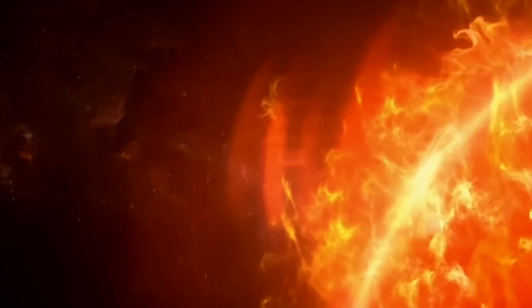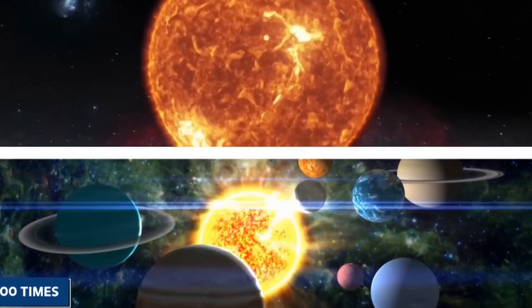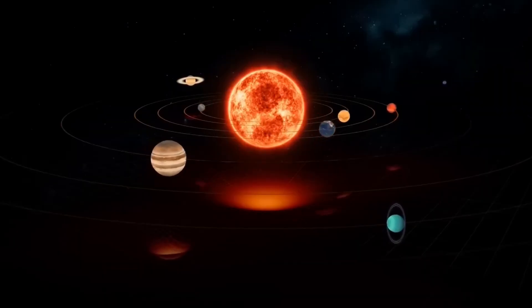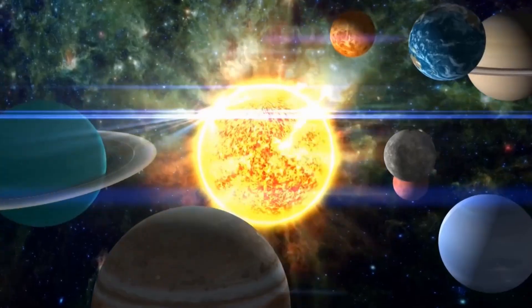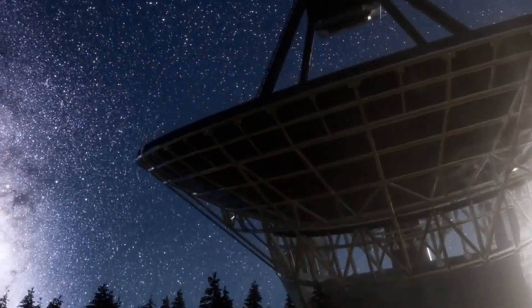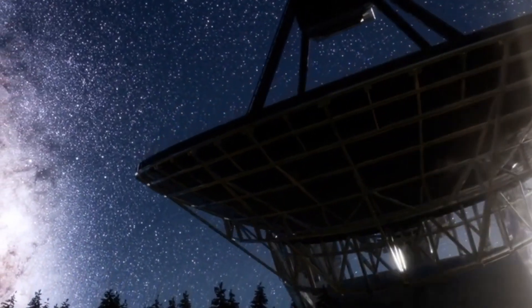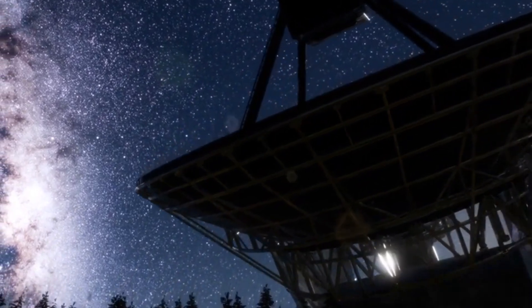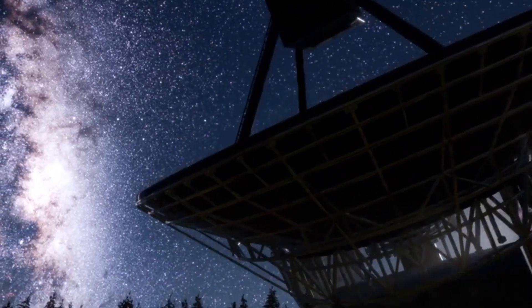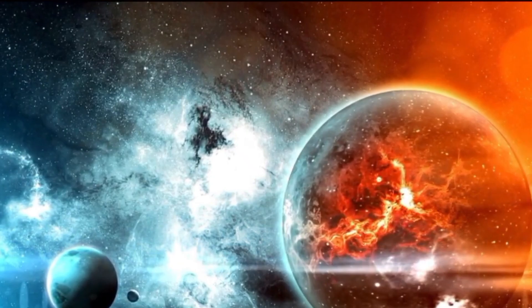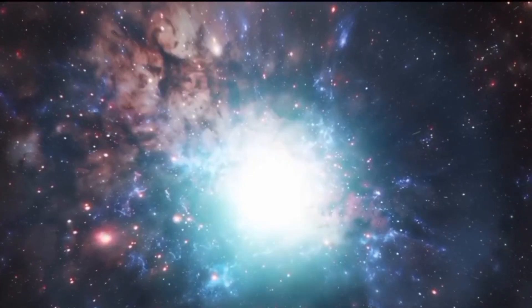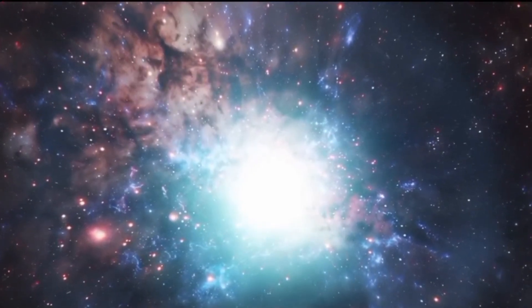Betelgeuse's enigmatic nature has always been a subject of fascination. Its sheer size and luminosity make it stand out, but it's the mysteries that surround this celestial body that truly captivate the imagination. For starters, Betelgeuse is a variable star. This means its brightness doesn't remain constant but fluctuates over time. While many stars exhibit this behavior, Betelgeuse's variations are particularly pronounced.